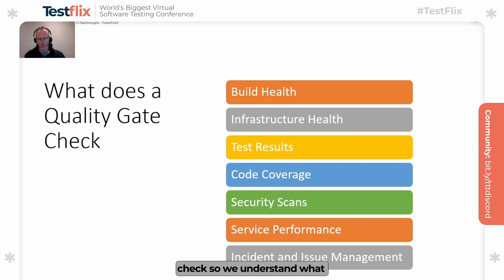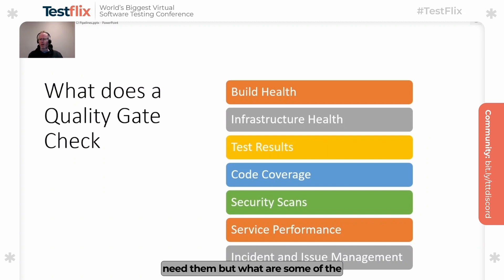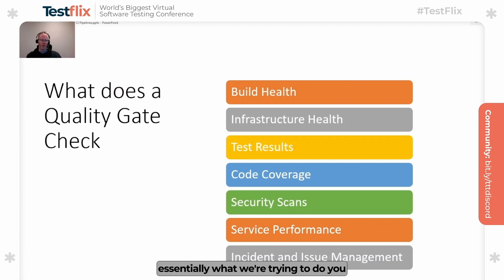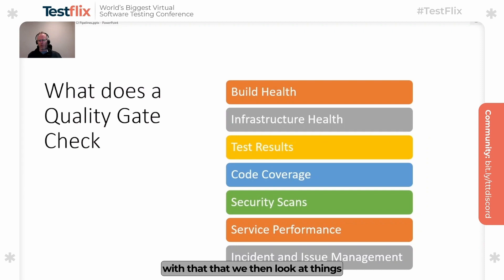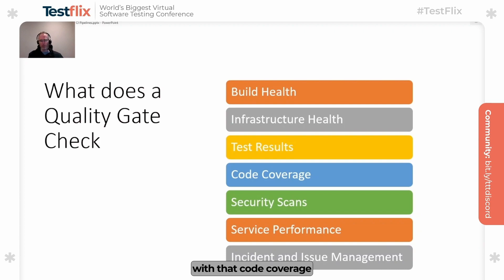What are some of the things that we actually want to check? We understand what a quality gate is and why we need them, but what are some of the things we're actually trying to do? These are just some ideas of things you can measure — there's obviously a lot more. Essentially we want to measure things like build health: did our code build right? Infrastructure health: is the infrastructure we need to deploy into in a healthy state? Test results — the most obvious one — not just from integration tests, but making sure our unit tests are there. And things like code coverage: not just that our tests pass, but was our code coverage sufficient to justify moving on to the next phase?